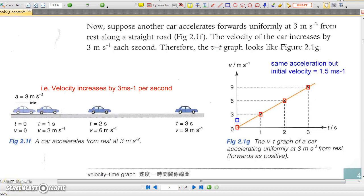With an initial speed of 1.5 m/s but the same acceleration, its velocity increases from 1.5 to 4.5 to 7.5 to 10.5 in the next consecutive 3 seconds. The graph will look like this: a parallel straight line with the same slope. Why?